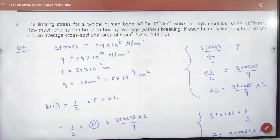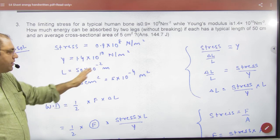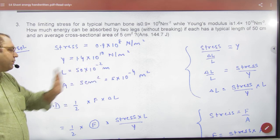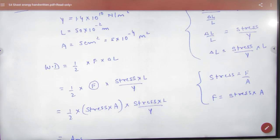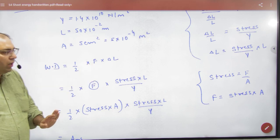So point number 1: this stress is given, Young's modulus is given, and length is 50 cm. Work done will be half into force into change in length. So I have a formula. Now I have...